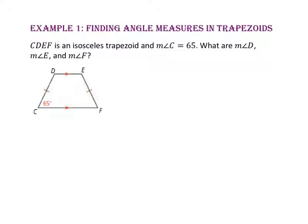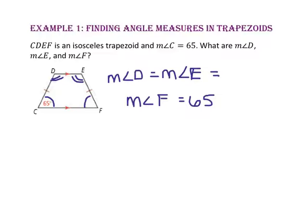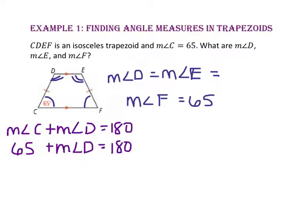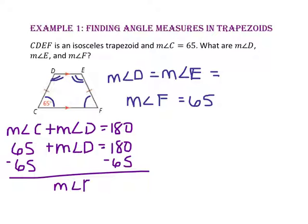Since the trapezoid is an isosceles trapezoid, we know the base angles are congruent. So angle C is congruent to angle F, and angle E is congruent to angle D. Since angle C and angle F are congruent, the measure of angle F is 65. Since angles D and E are the other pair of base angles, they are also congruent. Because angle C and angle D are same side interior angles between parallel lines, they are supplementary. So 65 plus the measure of angle D equals 180. Subtracting 65 from both sides, the measure of angle D is 115, and since angle D and angle E are congruent, both have the measure of 115.